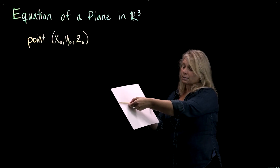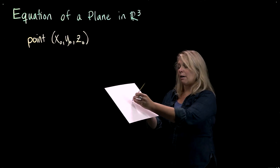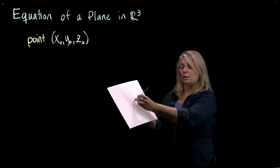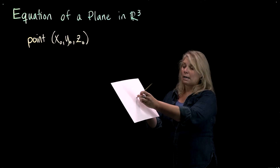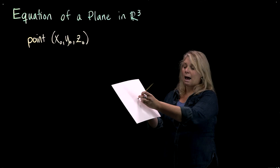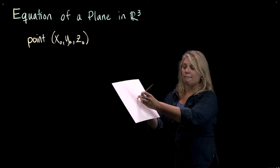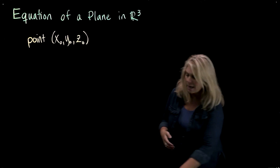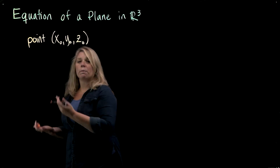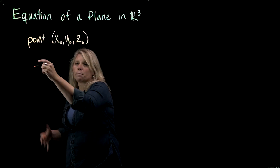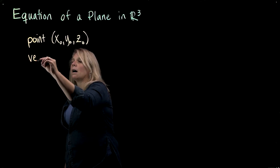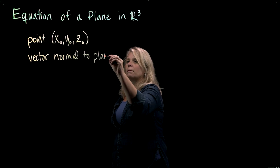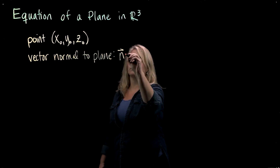One way to fix this is with another vector in the plane, or even easier, a vector that is perpendicular to the plane. Once I've established a vector perpendicular to this plane, I can't rotate the cardboard anymore and keep it perpendicular to that vector while still containing the same point. So those are the two basic things you need to write the equation of a plane: any point on the plane, and a vector that's perpendicular — or normal — to the plane. I'll use n for normal.